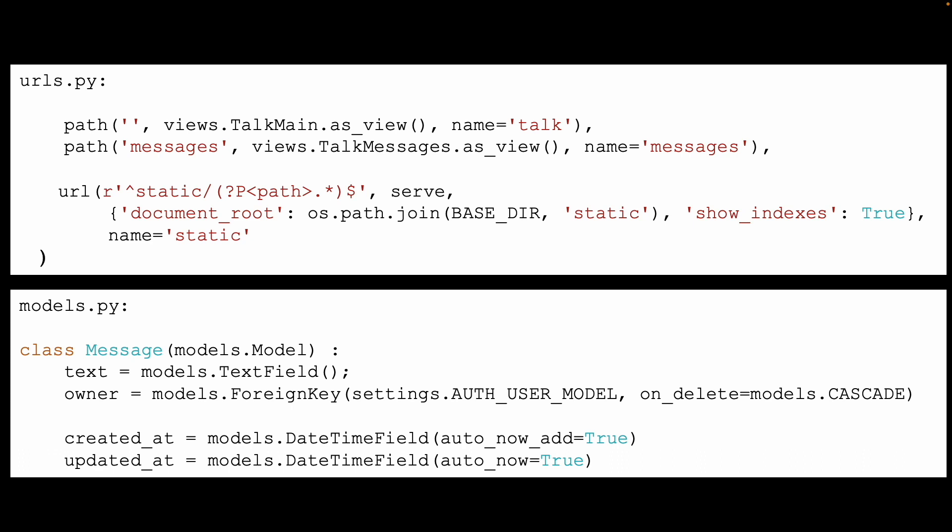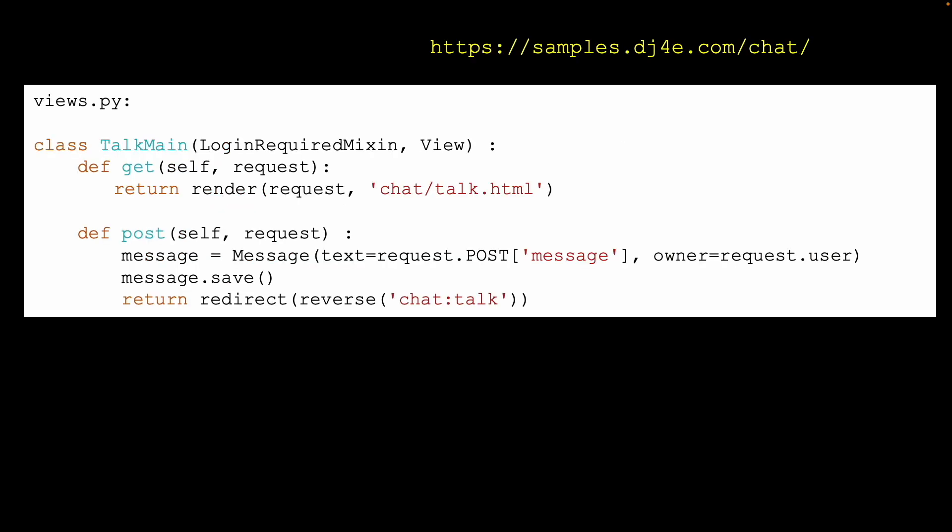There's a little spinner you can see when it first starts up. There's also a simple model where we have some text, who typed it in, what time it was created, and if there's any updating. In this case there's no updating, but we need the date so we can say 'two minutes ago'.